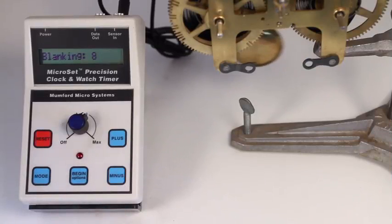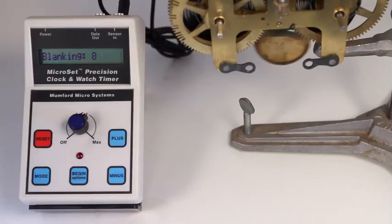For general clockwork, I set the blanking window to a size of 8. If you work with watches, the size must be smaller because they beat faster than clocks. I usually set it to 4 for watches.